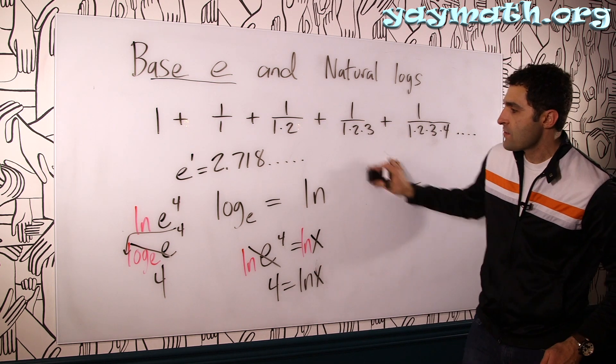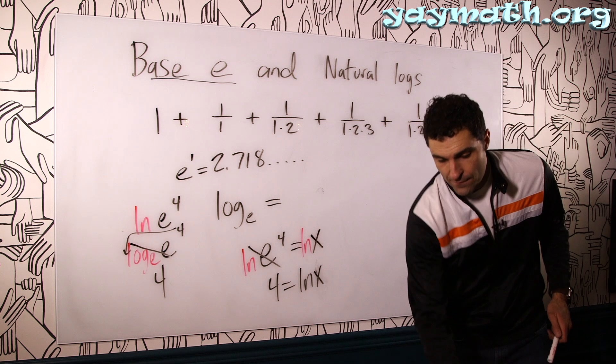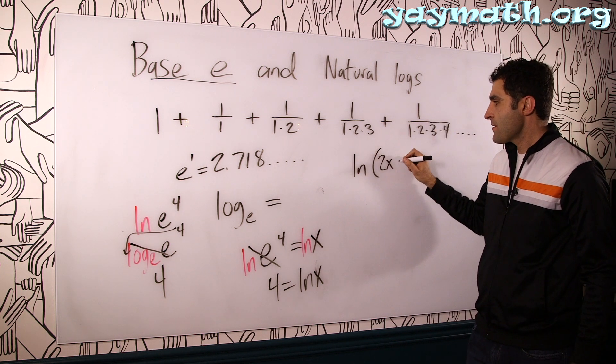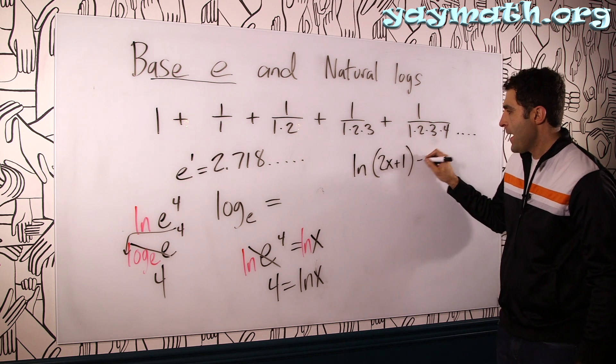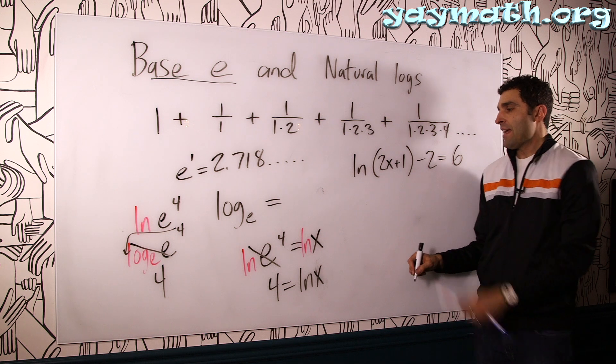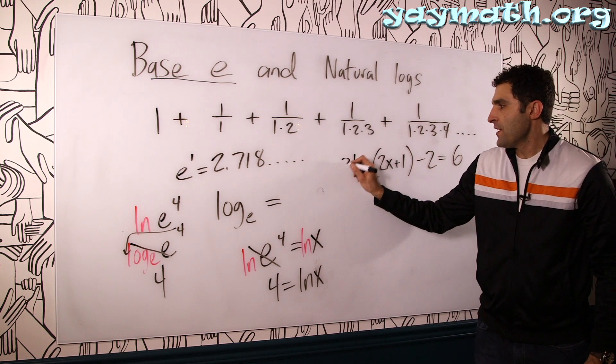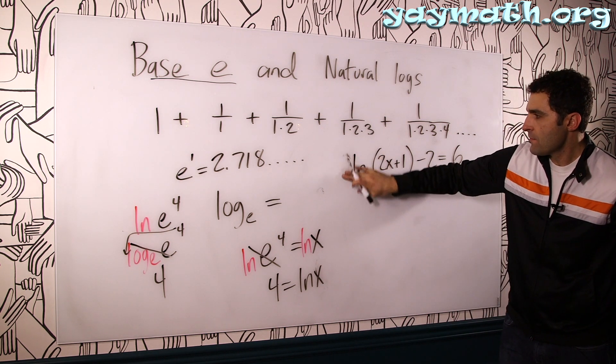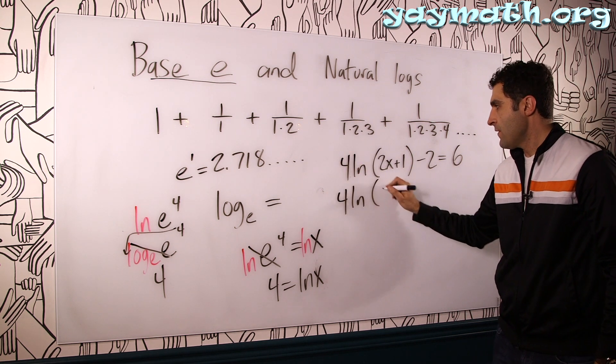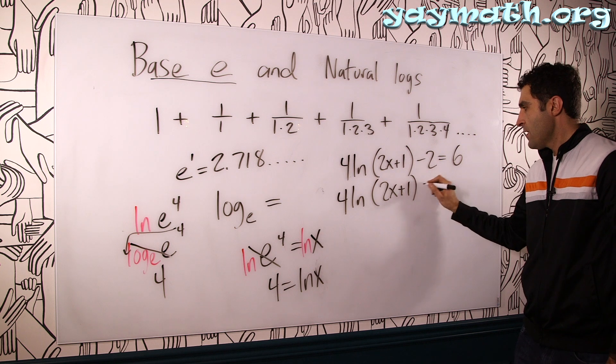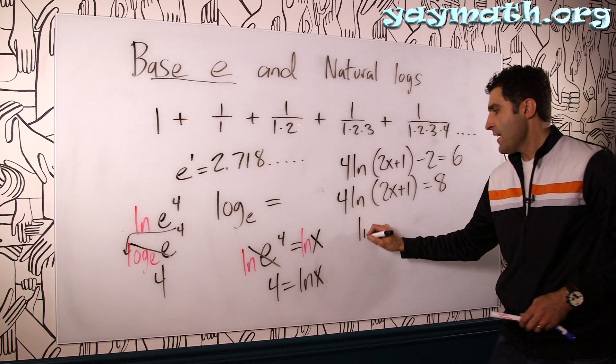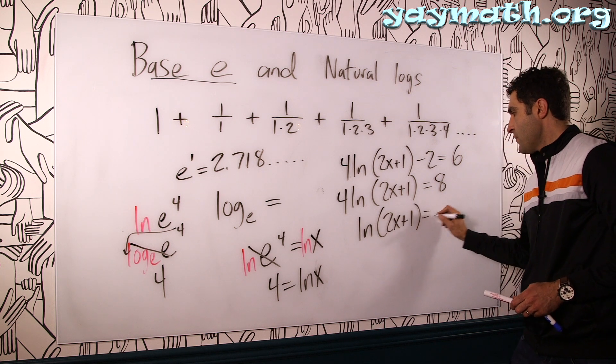Let's actually use exponents and logs to help us solve now. Let's say you had something like 4 LN of 2x plus 1 minus 2 equals 6. So we want to isolate this LN as much as possible. So we add 2 to both sides and we get 4 LN of 2x plus 1 equals 8. Divide both sides by 4. LN 2x plus 1 equals 2.